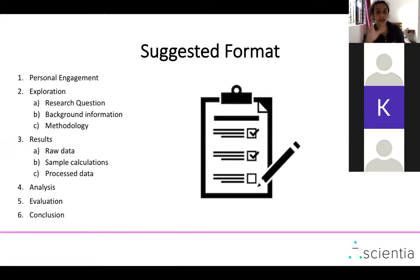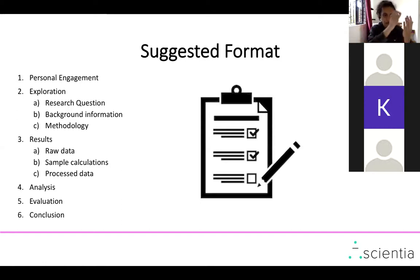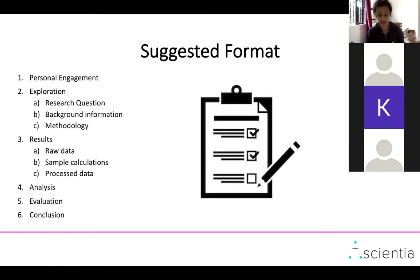Here is a format I suggest you use for your IA. The reason this format is really good is that it's laid out criteria-by-criteria, which makes it easier for the person marking your work to give you the points. For example, if you have a first paragraph on personal engagement and explain your personal engagement, the examiner will automatically tick off that criteria. So it's a good way of making their life easier — and they will give you the points.